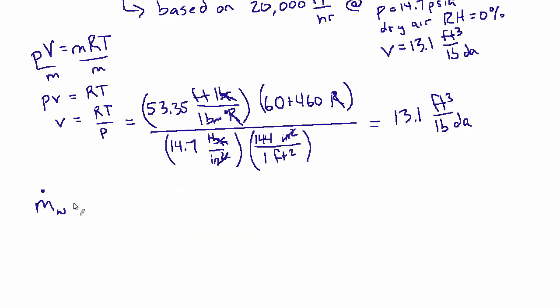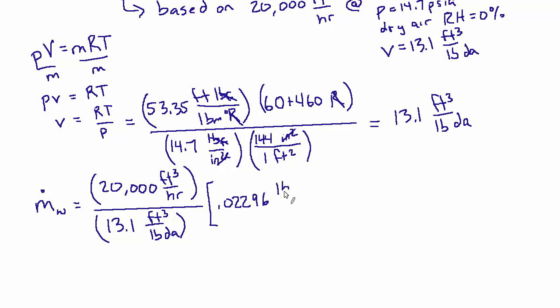So the mass flow rate of water is that volume flow rate, 20,000 cubic feet per hour, divided by the specific volume to get it to be a mass flow rate, 13.1 cubic feet per pound. And then the difference between the humidity ratios: 0.02296 pounds of water per pound of dry air at state two, minus 0.00484 pounds of water per pound of dry air at state three after that cooling process.